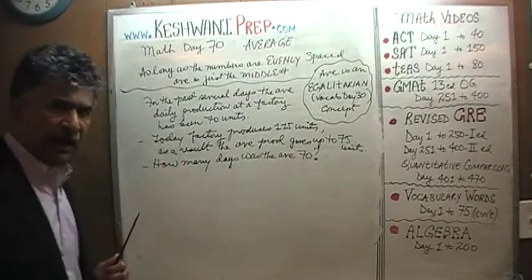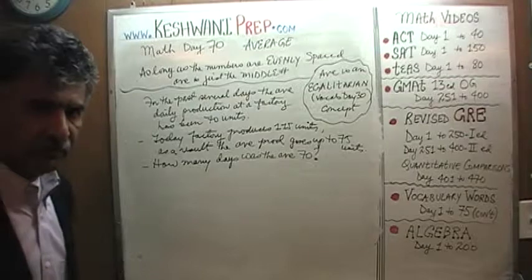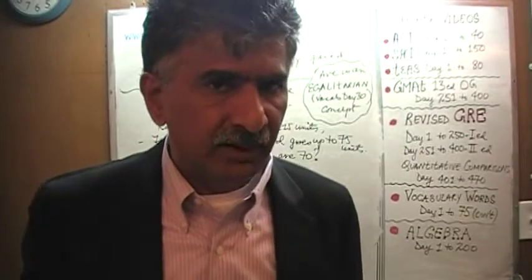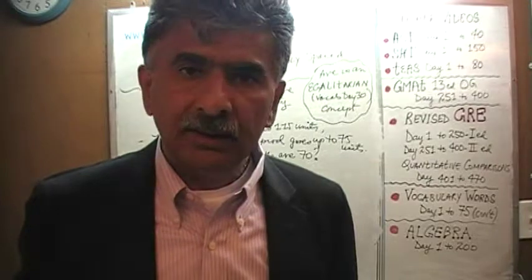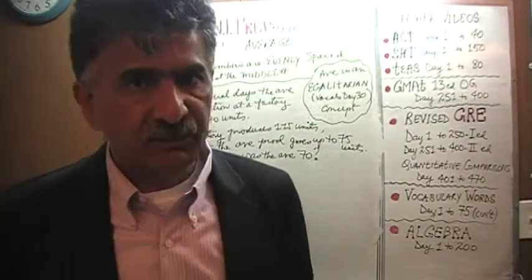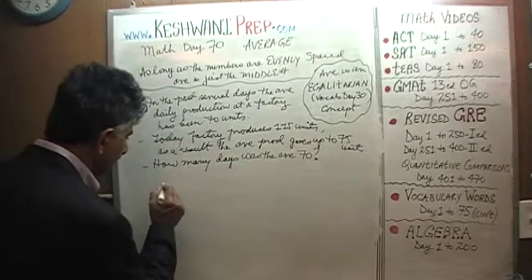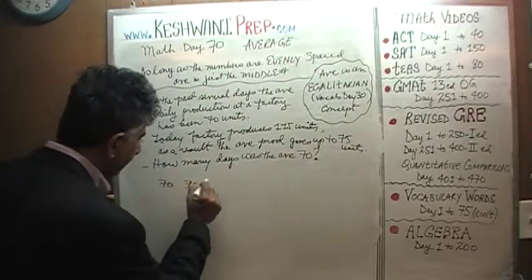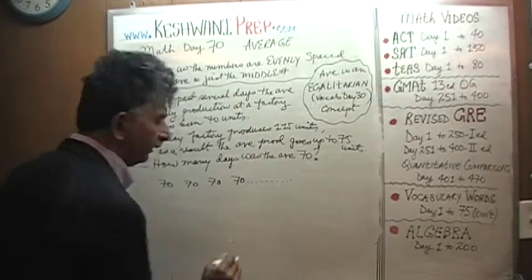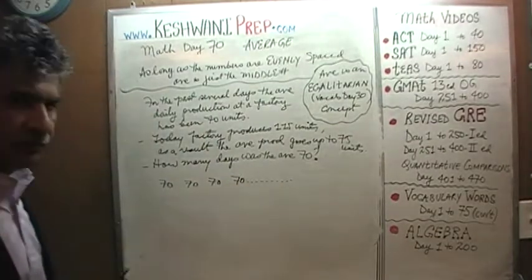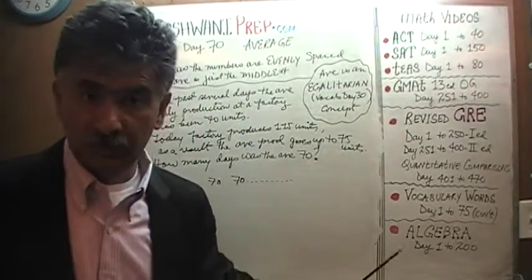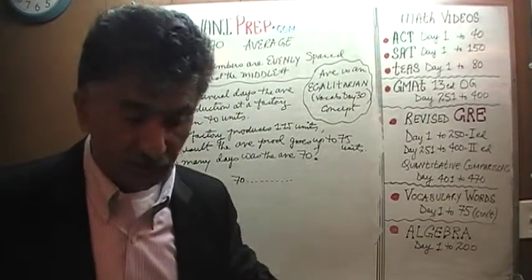For the past several days the average production has been 70. To keep our life simple, we are going to pretend that the production on every single day for the last few days has been 70 — a whole bunch of 70s. If every single day we produce exactly 70 units, what is the average? Of course, if they are all 70, the average is 70. That keeps things very simple.